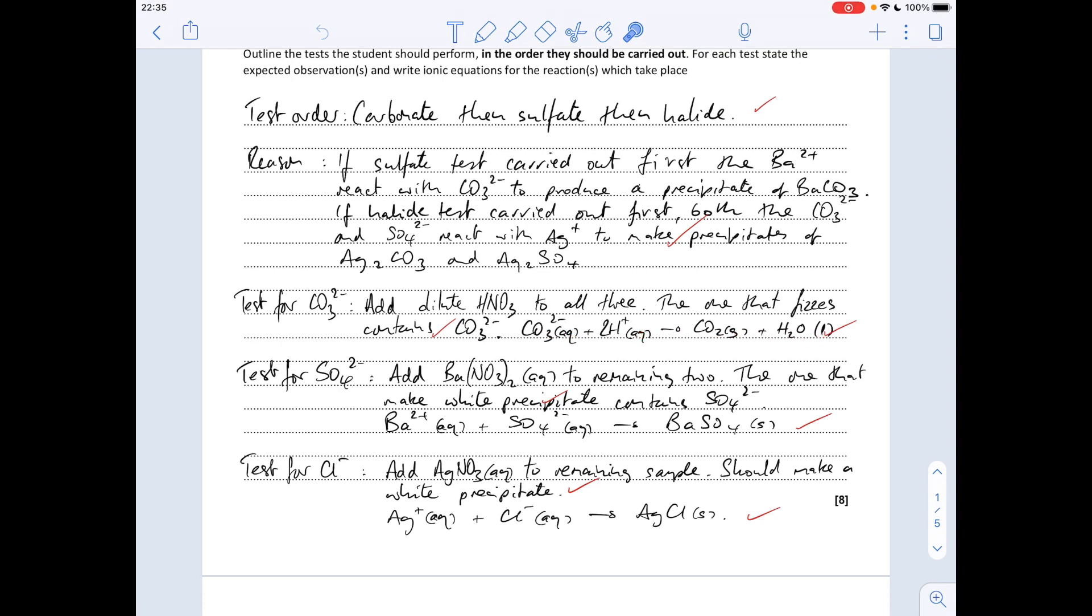That would be ruled out, then you're down to two unknowns. So you'd add barium nitrate, the source of barium ions, to test for the sulphate. The one that makes the white precipitate is obviously the sulphate and there's the ion equation for that precipitation reaction.